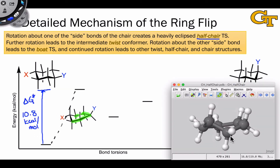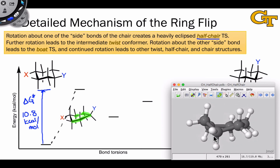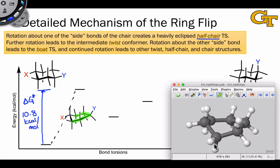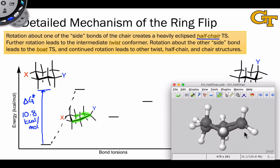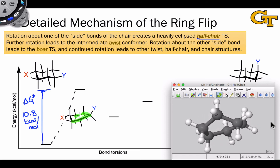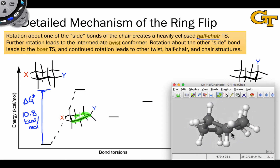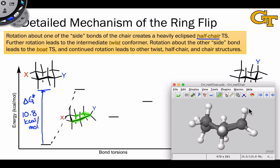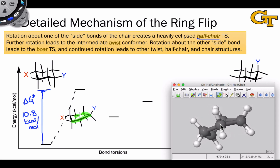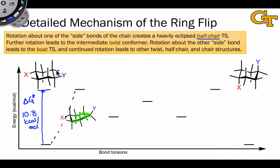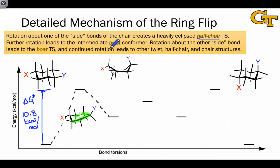We can see the problems with the half chair structure in a three-dimensional view: all of the carbons except the headrest are essentially coplanar, leading to a great deal of torsional strain visible by looking down the C-C bonds. It's starting to look very similar to the cyclopentane envelope conformation. Further rotations are going to alleviate that torsional strain, leading to the intermediate twist conformer.